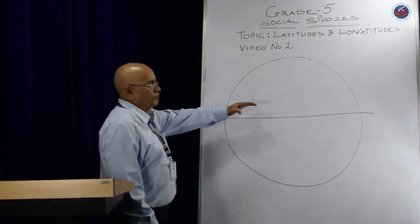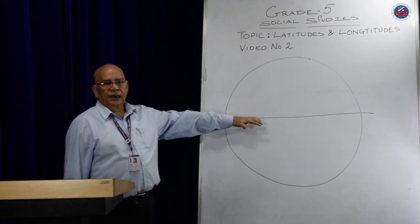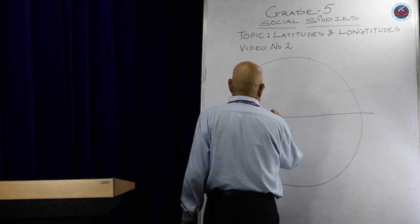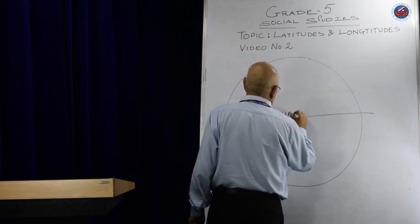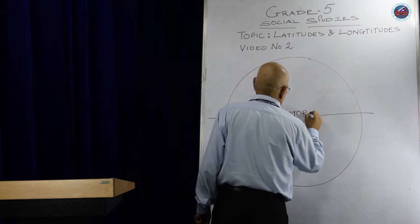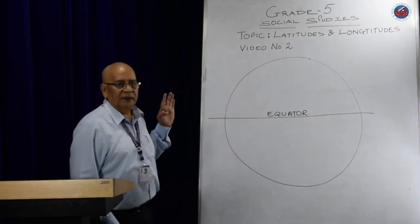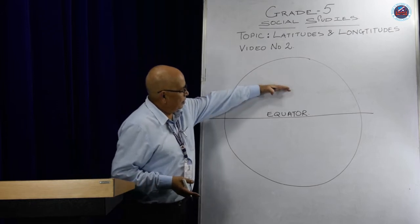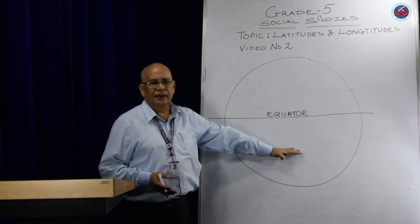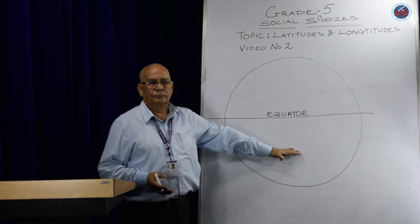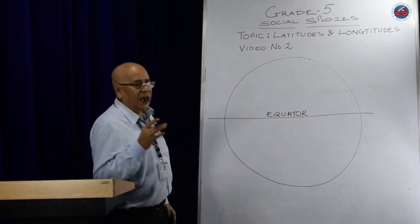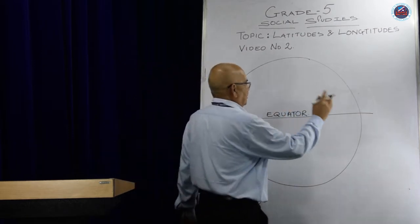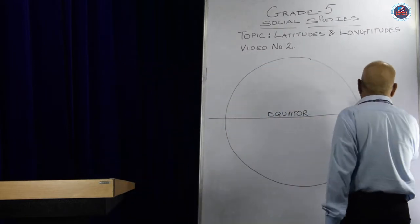The most important latitude is the equator. It divides the earth into two equal halves — the northern hemisphere and the southern hemisphere. There are other important latitudes also. Remember, the equator is on zero degrees.